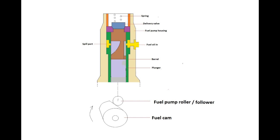When the top edge of the plunger covers the suction spill ports, fuel can no longer escape and pressure builds up. When the fuel pressure is high enough the needle valve in the injector will open and fuel will enter the cylinder combustion chamber as an atomized spray.